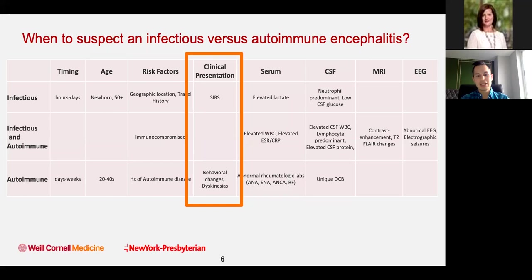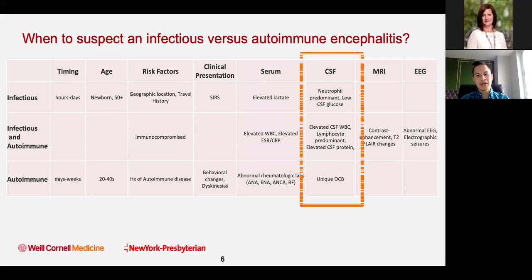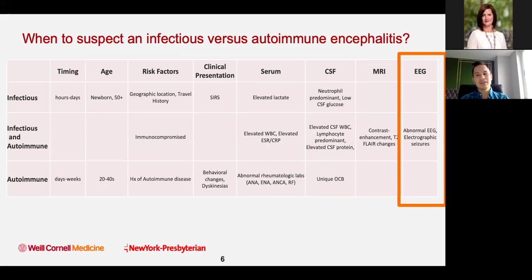For autoimmune encephalitis, if you have a history of autoimmune disease, you can easily get another one. If you're immunocompromised, you have a high risk of both infectious and autoimmune conditions. Clinically, SIRS criteria clue me into an infection brewing, whereas autoimmune patients usually have behavioral changes and abnormal movements or dyskinesias. Basic blood work: infectious shows high lactate and high WBC, whereas autoimmune shows abnormal rheumatologic labs like ANA, ENA, rheumatoid factor. In spinal fluid, neutrophils are common with infectious causes, while autoimmune tends toward lymphocytic predominance — so if you see neutrophils, it's very rarely going to be an autoimmune cause. MRI and EEG are not really distinguishing between the two; I use them to support whether somebody has encephalitis.